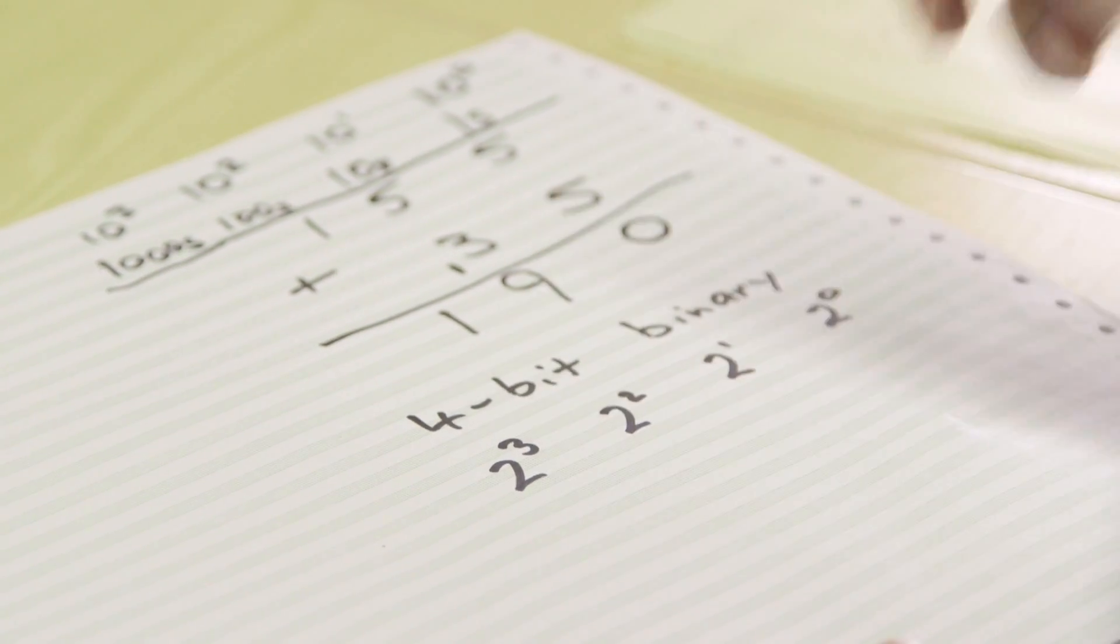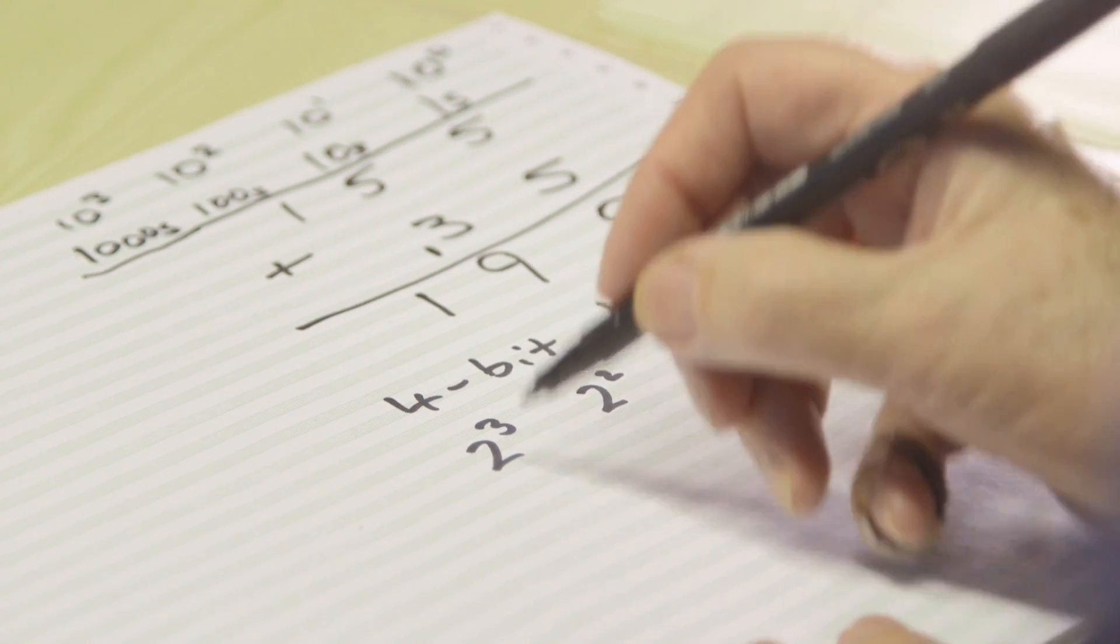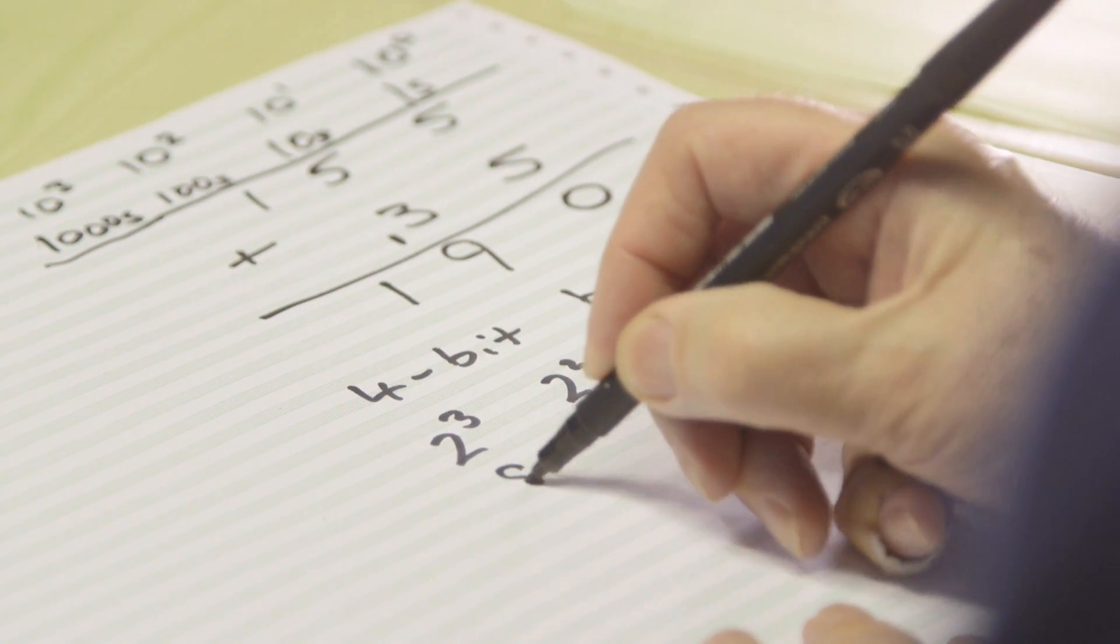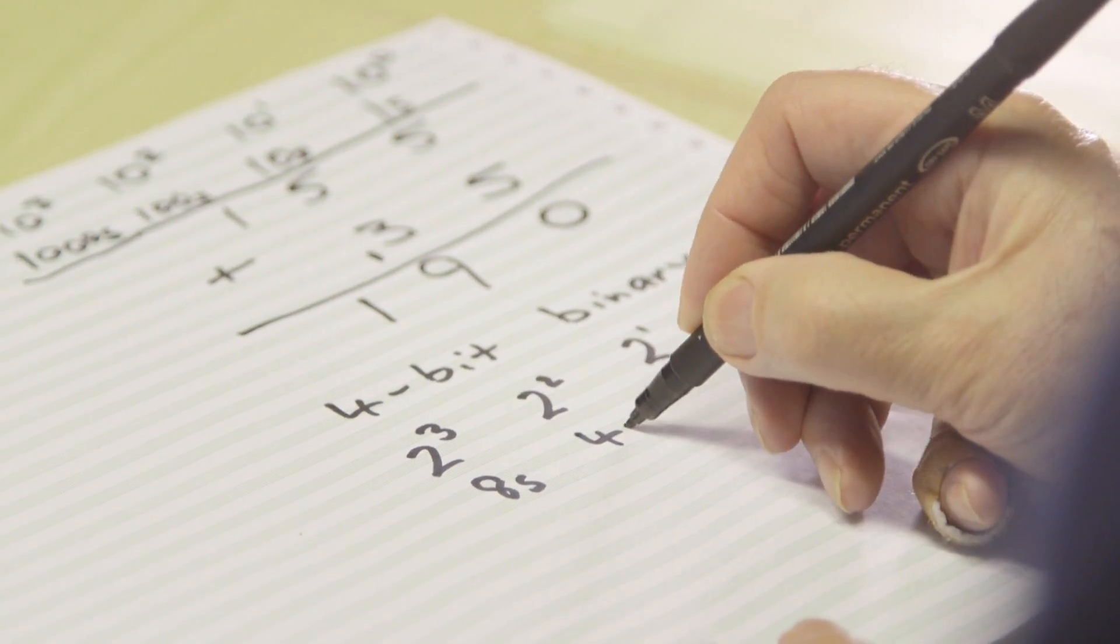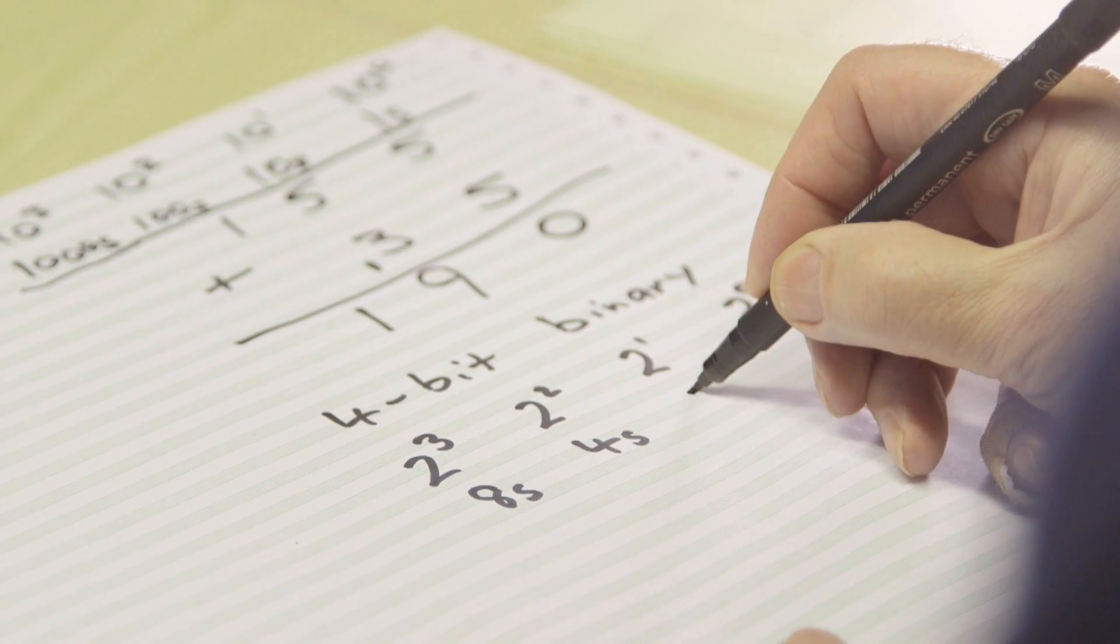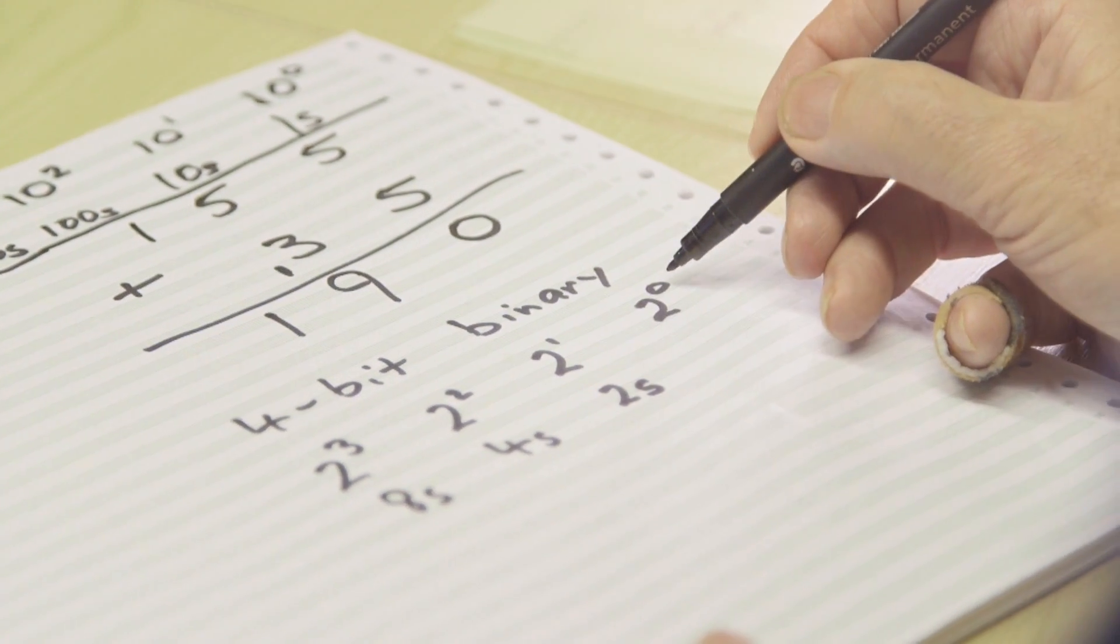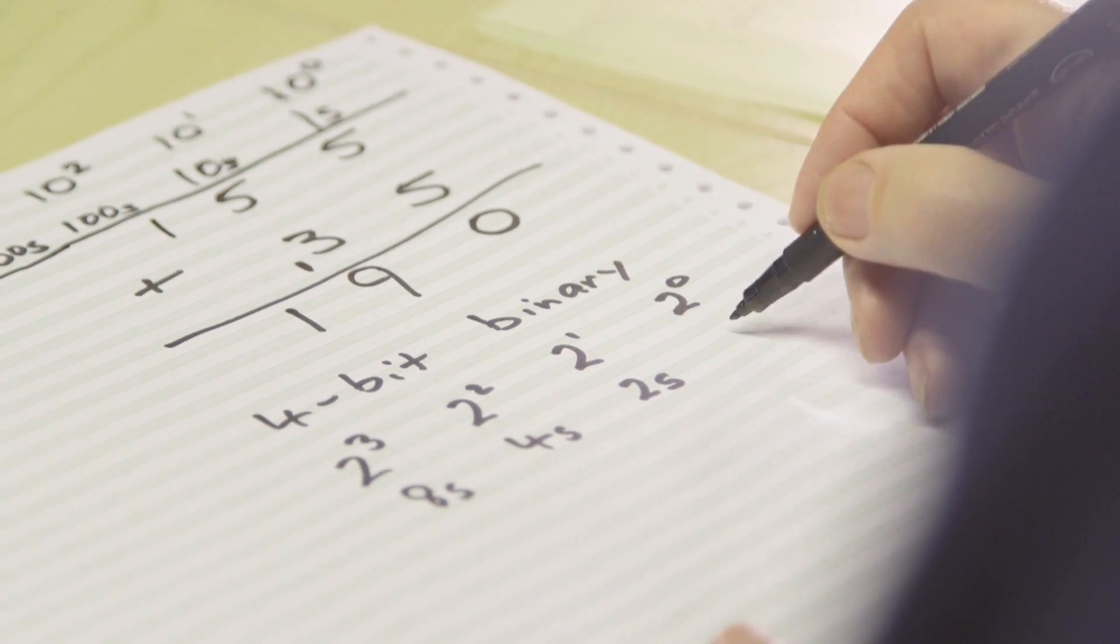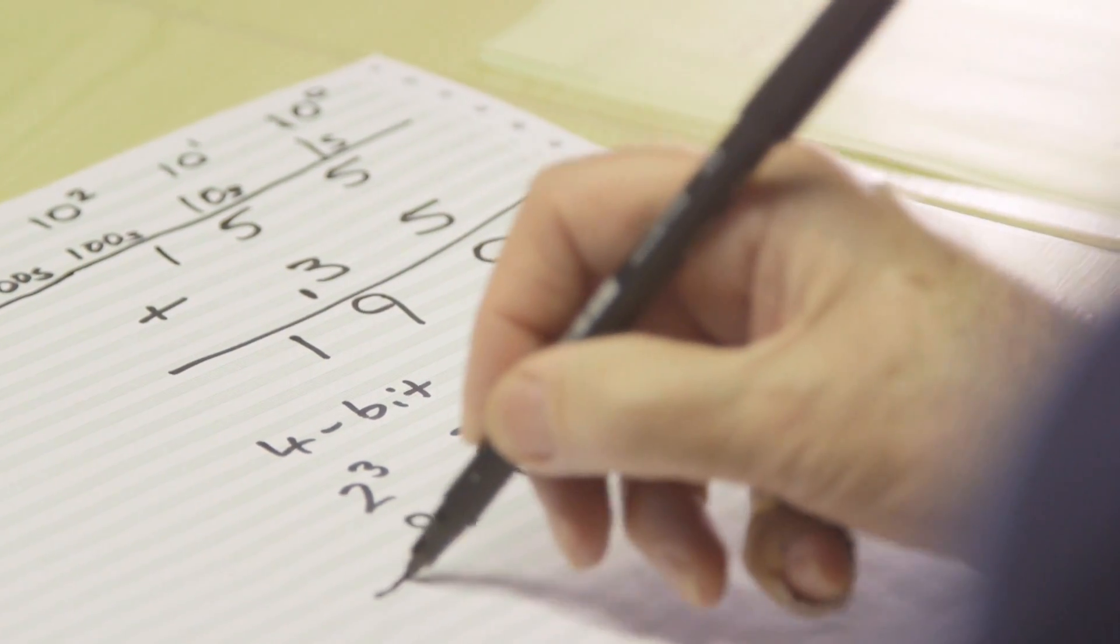1, 2, 3, 4 bits. Or if you like, you can also make a note to yourself that 2 to the power 3, this is the 8s column. 2 squared, this is the 4s column. This is the 2s column. And recalling that anything to the power 0 is 1, this is the 1s or the units column.